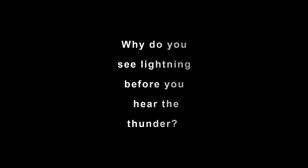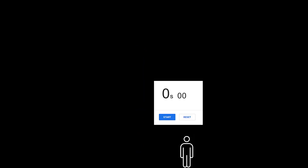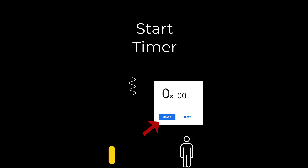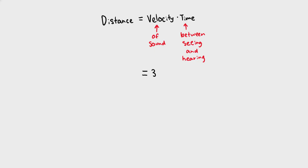Why do you see lightning before you hear the thunder? Even though sound is fast, light is much faster. To determine how far away the lightning struck, just count or measure the amount of time between when you see the flash and hear the thunder. Then multiply that time by the speed of sound in air to get the distance.